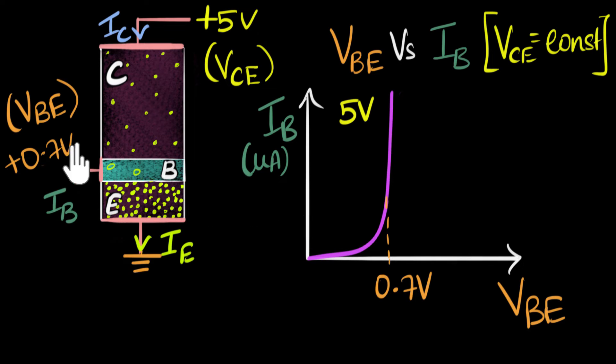Now here's the question. What if we repeat this entire experiment at, let's say, a much higher voltage of VCE? Let's say at about 10 volts of VCE, what would happen? I want you to just think for a while and see how it would affect this current.